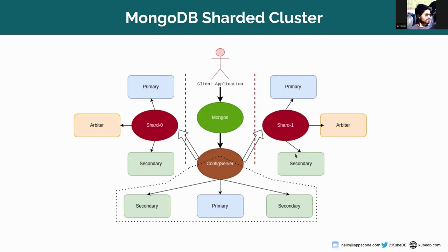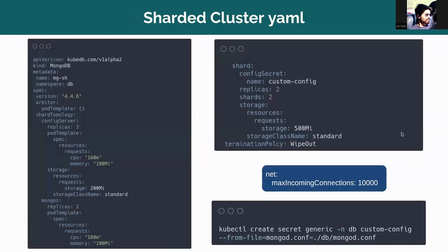This is the basic structure I'm going to apply as a MongoDB sharded cluster, where two shards will be there along with a mongos and one config server. In each of the shards there will be one primary, one secondary, and one arbiter pod — following the PSA (Primary, Secondary, Arbiter) structure. This is the YAML I'm going to apply. The MongoDB sharded cluster name is mgsh, which is in the dvn namespace, and the version I'm using is 4.4.6.